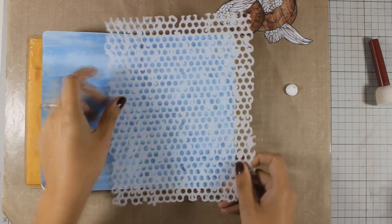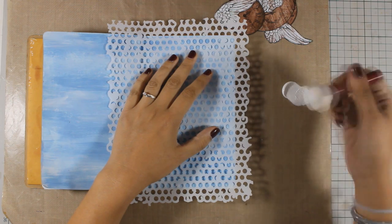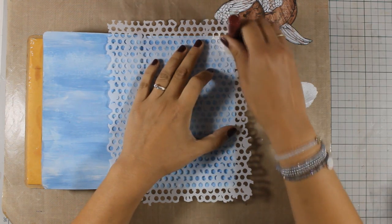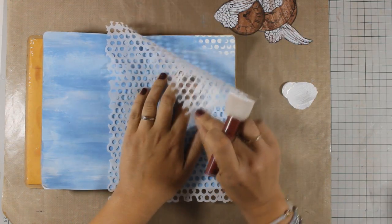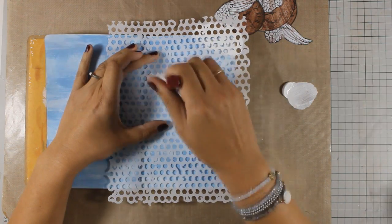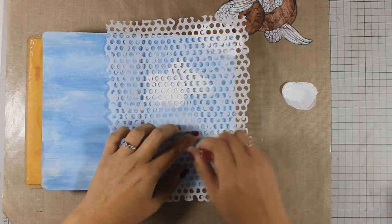I prefer doing stenciling with thick acrylic paints because they do not go underneath the stencil so I get great results each time. A little goes a long way with this technique. So I'm just picking up a little bit of paint with my sponge and dab it in different areas on my page trying to create areas that look like clouds.